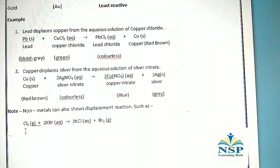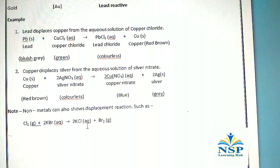For example: Cl₂ + 2KBr → 2KCl + Br₂. Chlorine displaces bromine from potassium bromide, forming potassium chloride and bromine.